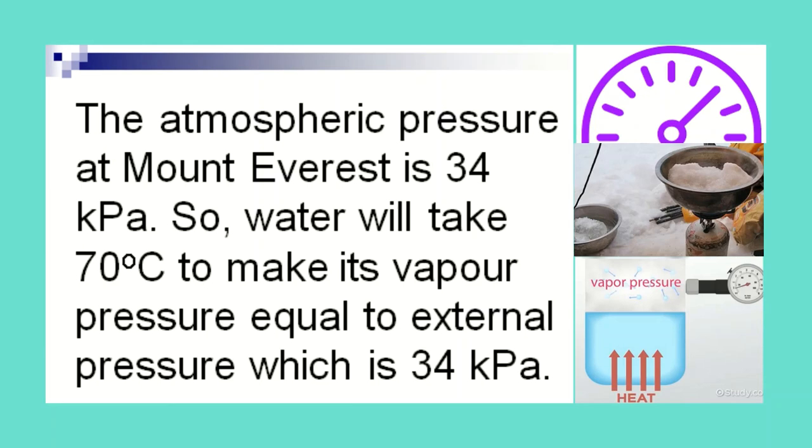The atmospheric pressure at Mount Everest is 34 kilopascals. So, water will take 70 degrees Celsius to make its vapor pressure equal to the external pressure, which is 34 kilopascals.